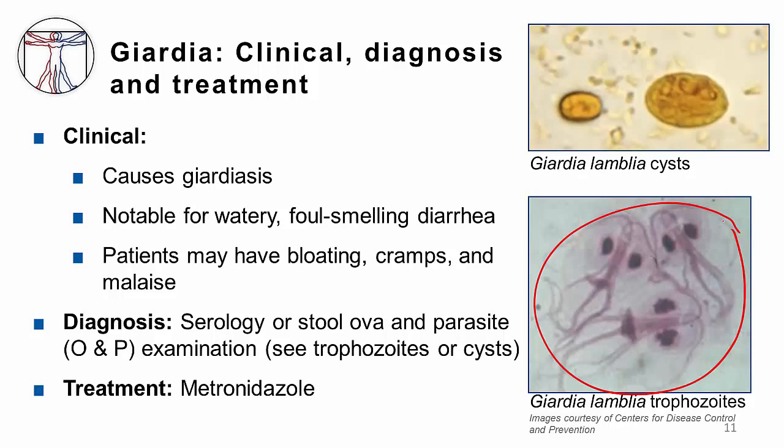We diagnose infection using serology or stool ova and parasites — we usually get three O and P's, in which you may see cysts or trophozoites. We treat infection with metronidazole.